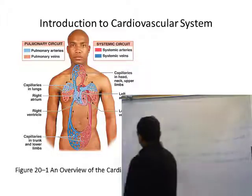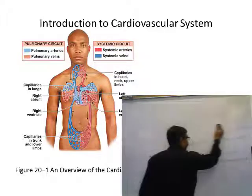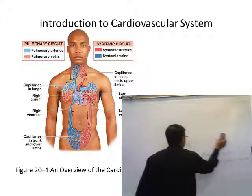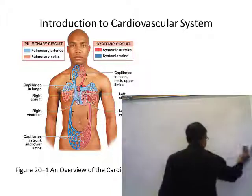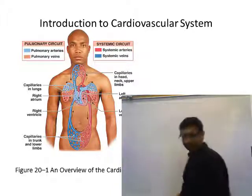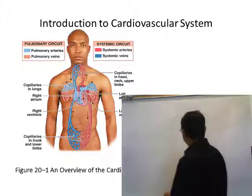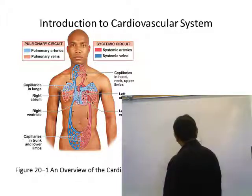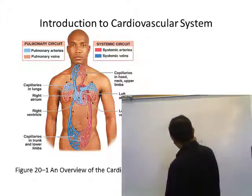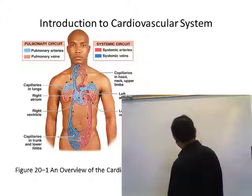The human heart has four chambers: right atrium, left atrium, right ventricle, and left ventricle. The right side has deoxygenated blood, and the left side has oxygenated blood.